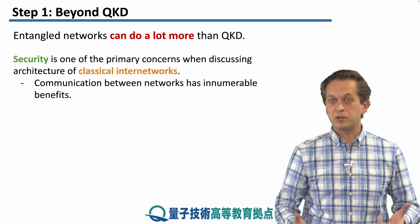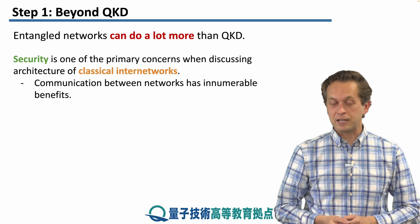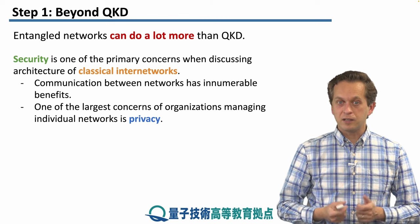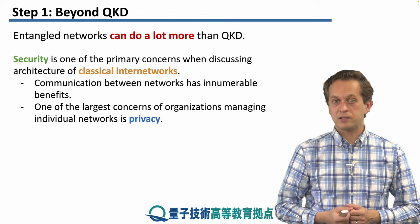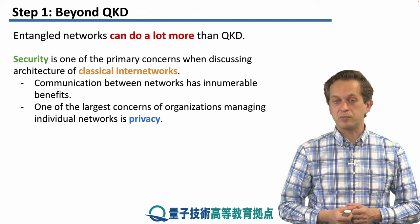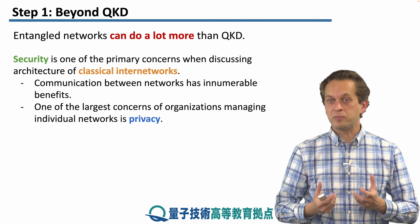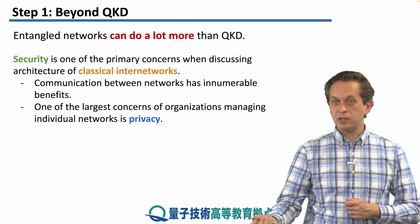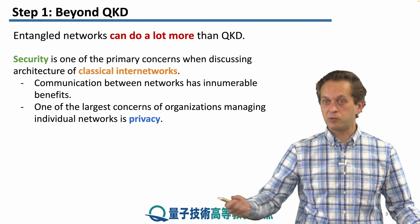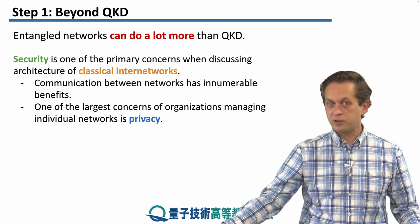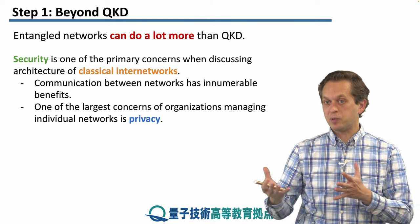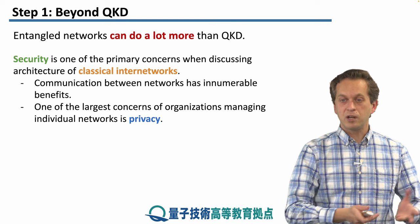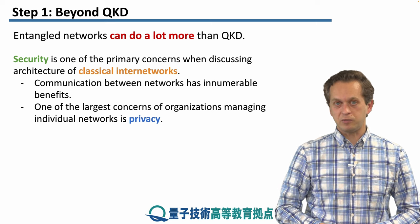Communication between networks is what makes the classical internet possible. On the other hand, the organizations that run and manage these networks are concerned about their privacy. On one hand we want to connect and communicate — we want to allow users from one network to connect to users from a different network — but at the same time the people running the network don't want to reveal too much about the inside of their network to anyone outside.